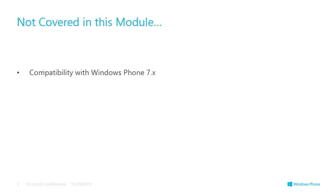Unfortunately we're not going to be able to cover too much about building apps that incorporate Windows Phone 7 as well. Anything you develop for Windows Phone 7 runs on Windows Phone 8 anyway. A lot of the techniques for code sharing, like add-as-link, apply just as well to having a single code base for a Windows Phone 7 version and a Windows Phone 8 version. But in the interest of keeping this focused, we're just going to focus on the Windows Phone 8 and the Windows 8 story.